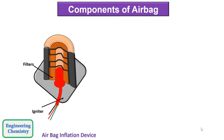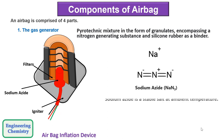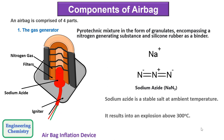Let's see the components of an airbag. An airbag is comprised of four parts. The first is the gas generator — a pyrotechnic mixture in the form of granulates, encompassing a nitrogen-generating substance and silicon rubber as a binder. The main component is sodium azide. Sodium azide is a stable salt at ambient temperature, but it results in an explosion above 300 degrees Celsius and generates nitrogen gas.